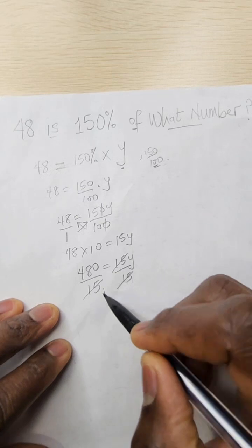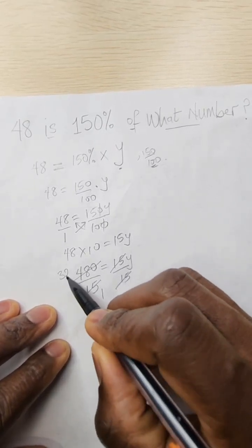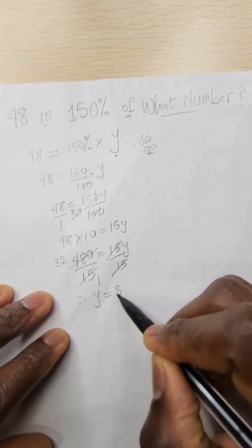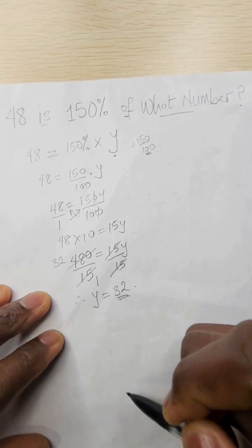15 here is 1, 15 here is 32. So therefore y is equal to 32.